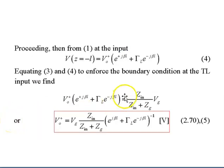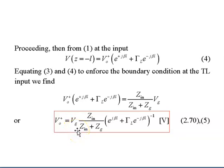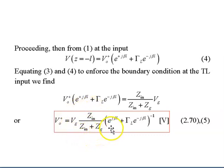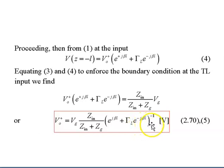By enforcing the boundary condition at the transmission line input, V_0+ can finally be calculated using the formula: V_in equals V_G times Z_in over (Z_in plus Z_g) — this is the voltage divider we have seen before — times e^(+jβL) plus the reflection coefficient times e^(−jβL), all raised to the power of minus one.